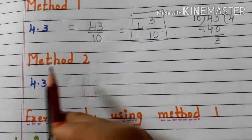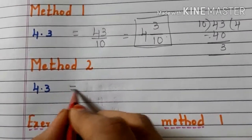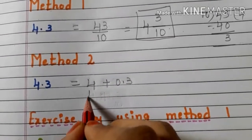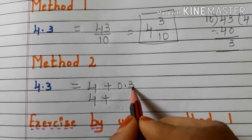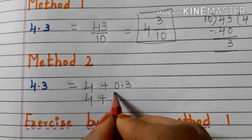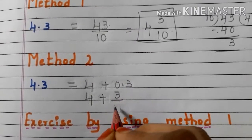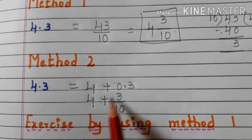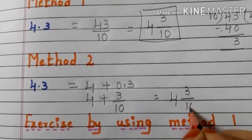Now let us see Method 2. Here also we are taking the same example 4.3. We can write 4.3 as 4 plus 0.3. Write 4 as it is, plus — observe how many digits are there after the decimal point. Only one digit, so write the number without any decimal point: 3 by 10, since there is one digit. Now we have 4 plus 3 by 10, so write the mixed fraction 4 and 3 by 10.